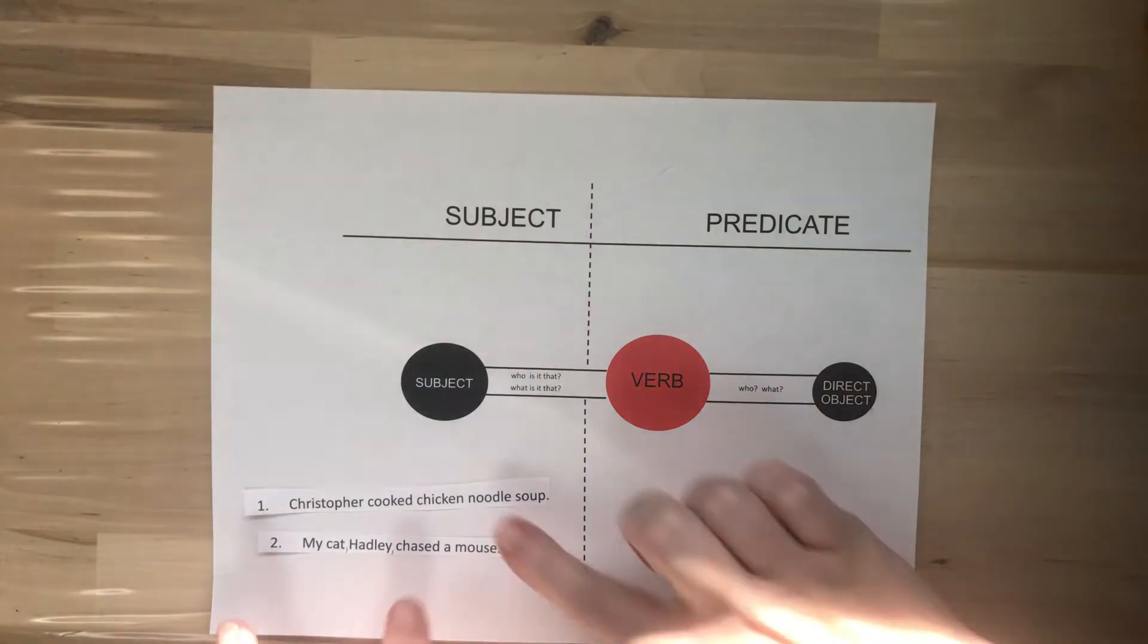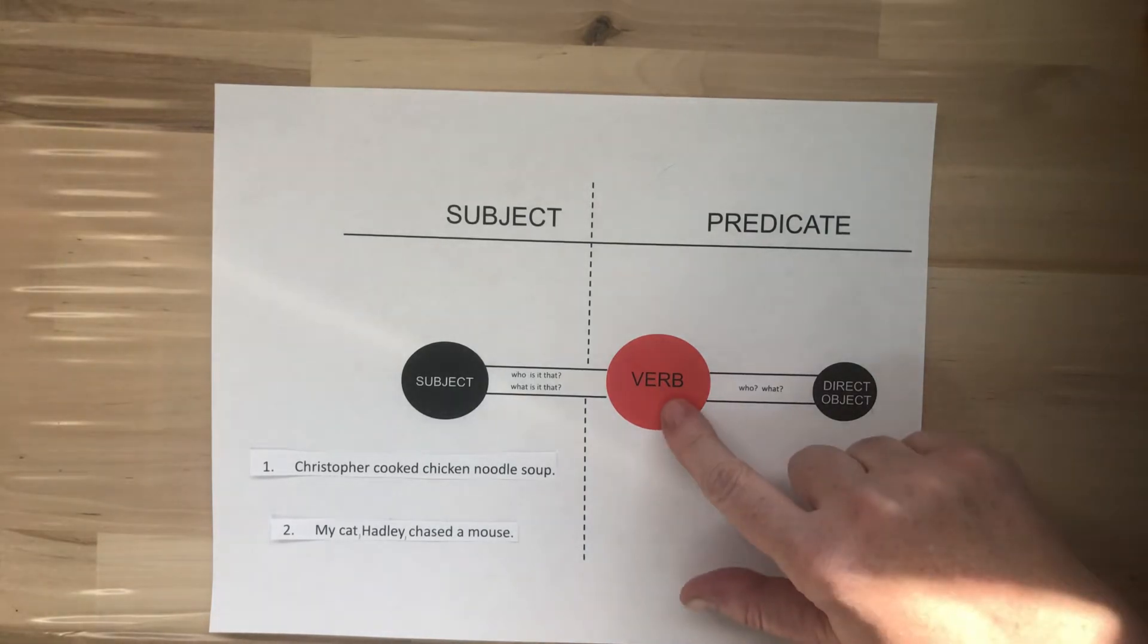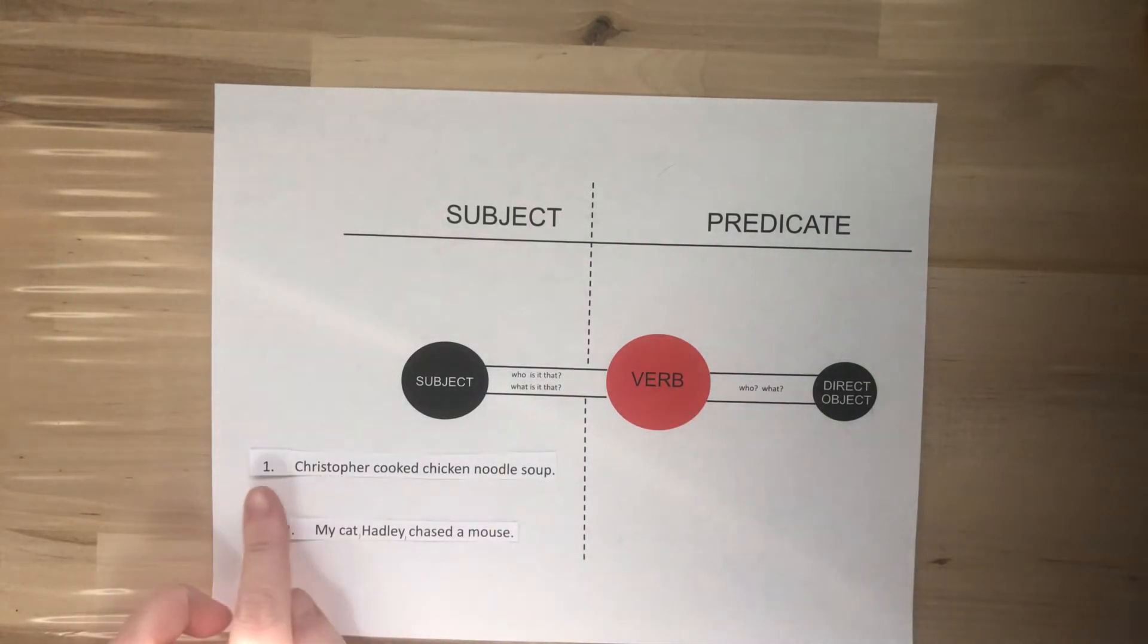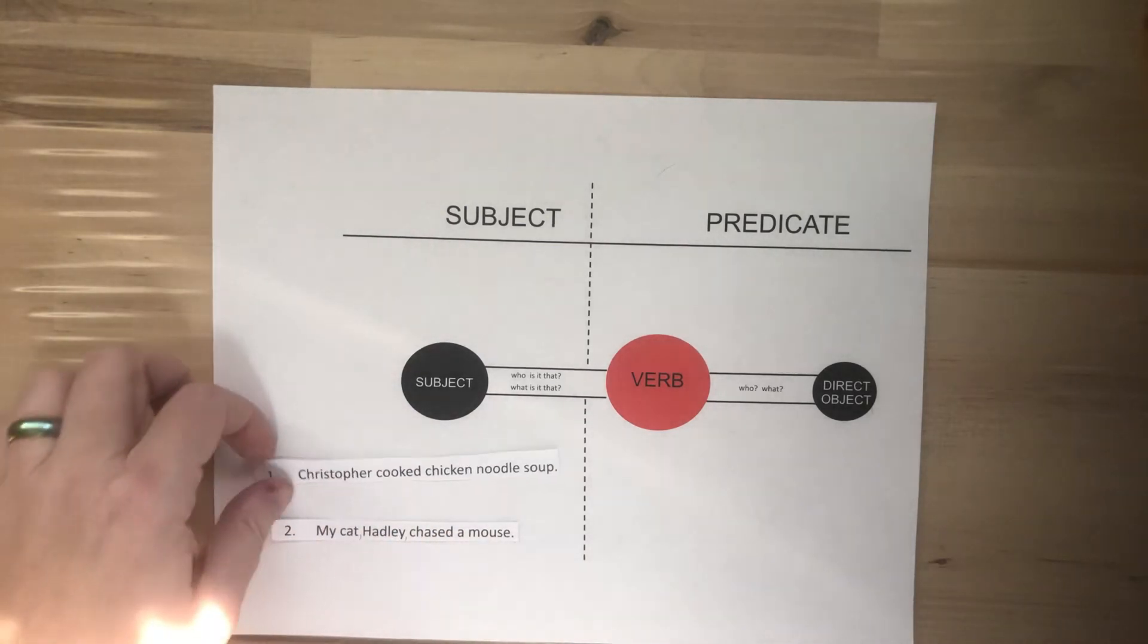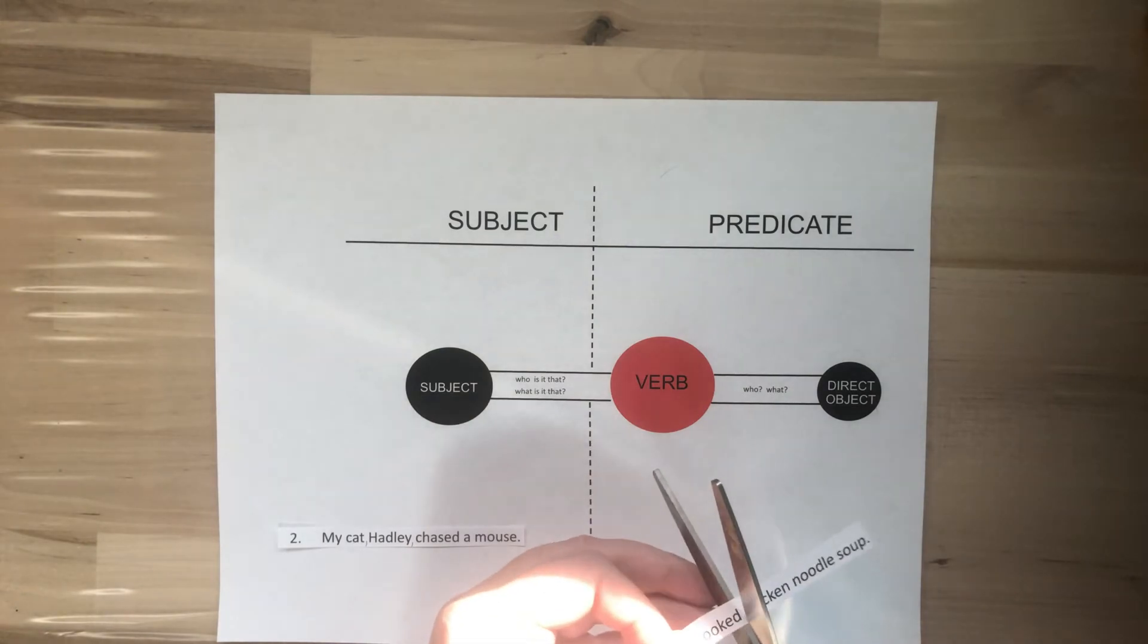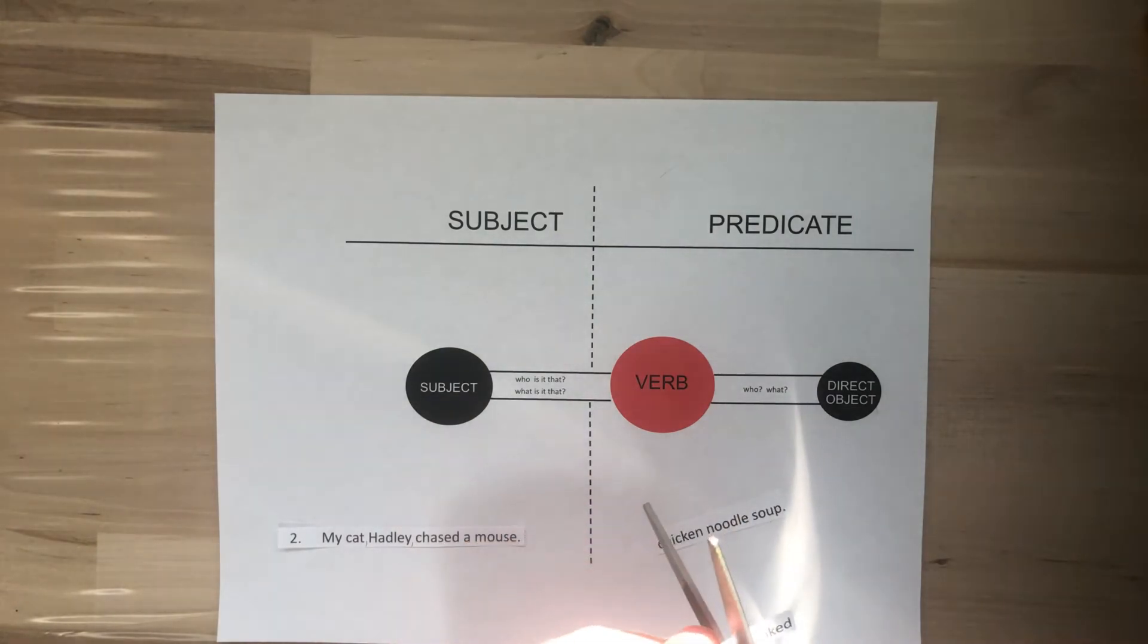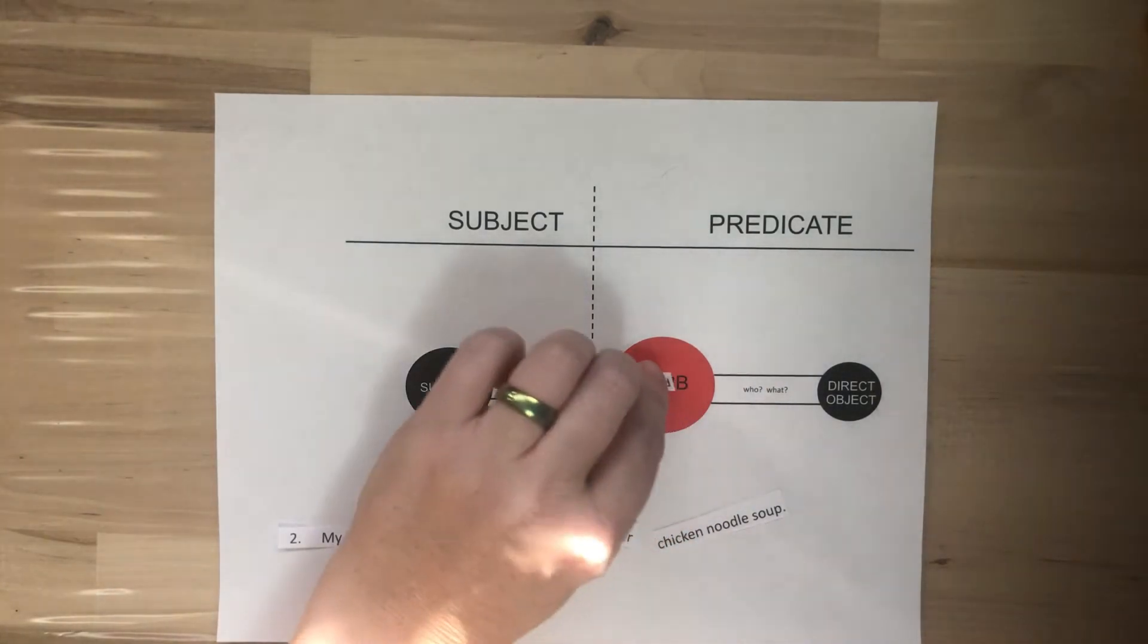So, let's have a look at the two sentences I have right here. My first sentence says, Christopher cooked chicken noodle soup. Now, remember, the first thing we're looking for is our verb. I know that in this sentence, Christopher cooked chicken noodle soup, our verb is cooked because that is the action. I'm going to cut out cooked and put cooked onto the verb.